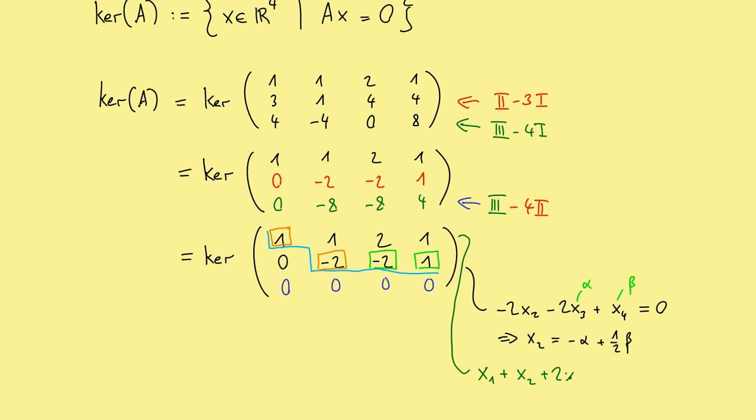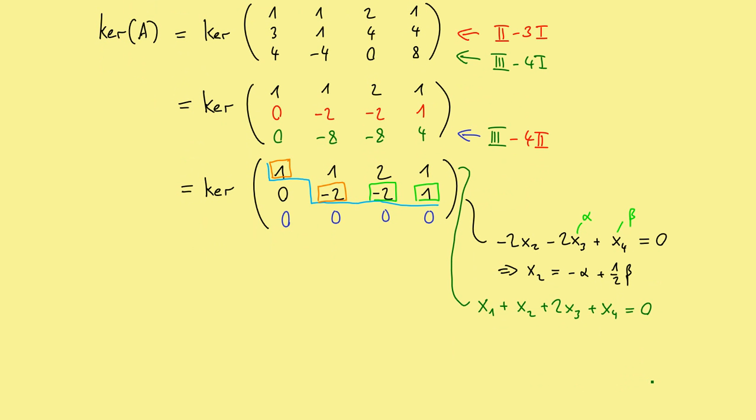And the equation in the first row gives us x1 plus x2 plus 2 times x3 plus x4 equals 0. But we already know that we can write x2 as minus alpha plus 1 half beta. We know that this here is just 2 times alpha, and this is just beta. So we can write x1 also in terms of alpha and beta. And this is just minus alpha, so 2 alpha minus 1 and minus 3 half beta. Of course, this is the solution set of our system of linear equations given by Ax equals 0.